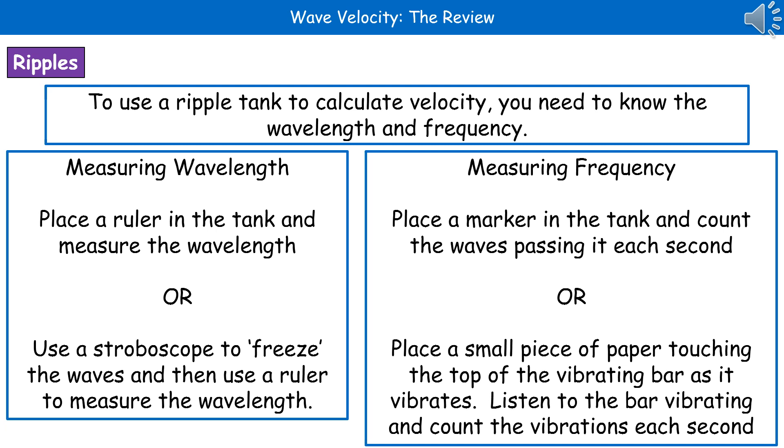Alternatively, what we could do is place a small piece of paper that just touches the top of the vibrating bar as it vibrates. Then, as opposed to having to try to watch and count, you can listen so that as you get that little bit of paper hit by the bar, you get that little vibrating sound and you can just count the number of vibrations each second.